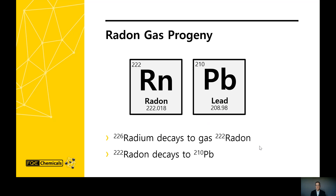Radon-222 is the intermediate decay product of radium-226, and it preferentially follows the natural gas lines. It decays through several rapid steps to lead-210, which can therefore build up as a thin film in gas extraction equipment. Radon typically follows the gas stream, and in the absence of natural gas, radon will dissolve in the hydrocarbon and aqueous phase.